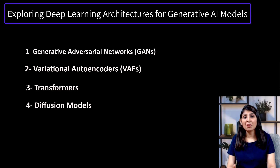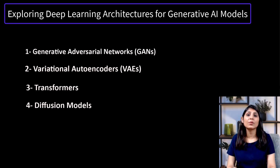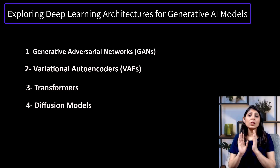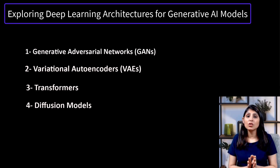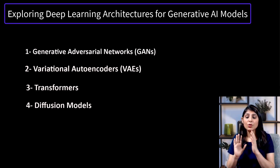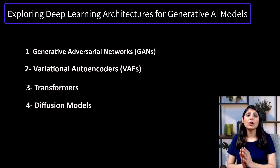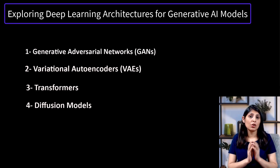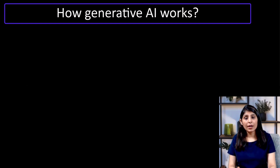All these models can generate high-quality images, text, and other content based on the data they were trained on. The network architectures of all these models are different, but the goal is the same — using any of these architectures you can create your own LLM.